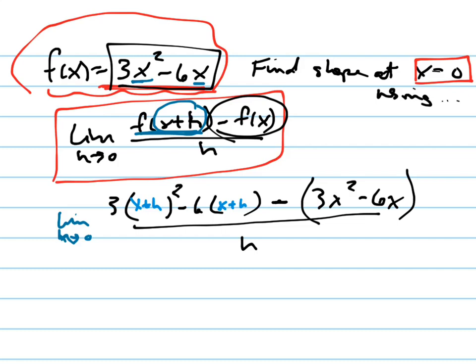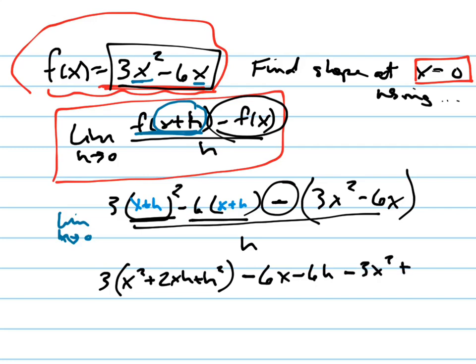So do this very carefully. Let's do this first. That's going to be x squared plus 2xh plus h squared. And that's all being multiplied by 3, so don't forget that. Then we've got distribute that negative 6 in. That's negative 6x minus 6h.